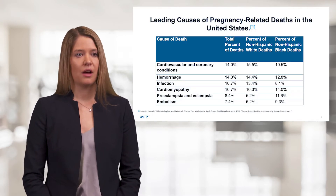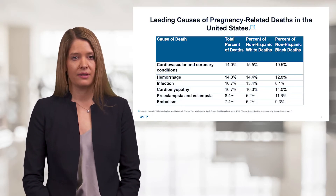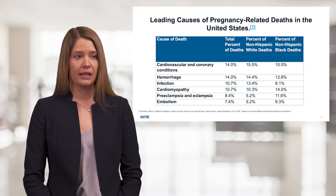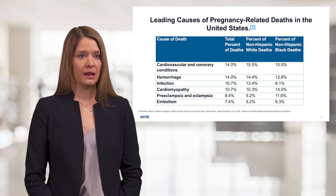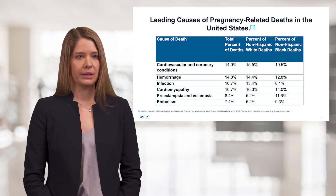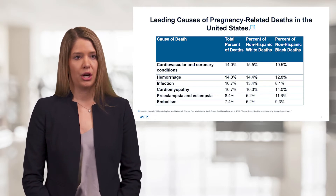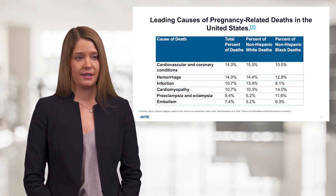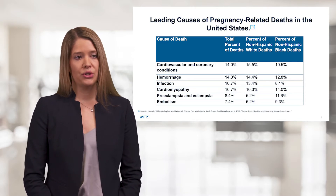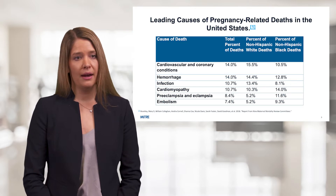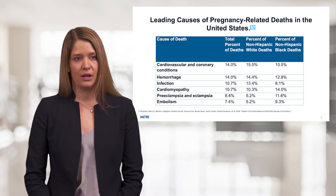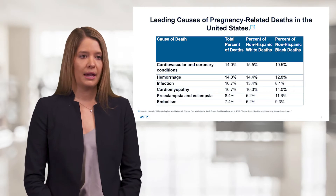There are many leading causes of pregnancy-related death in the US. This includes cardiovascular and coronary conditions, hemorrhage, infection, cardiomyopathy, preeclampsia, and embolism. As you can see on this chart, these conditions do affect different races at different rates. On this chart you can see non-Hispanic white women and non-Hispanic black women — those are the two races we'll be focusing on in this project.